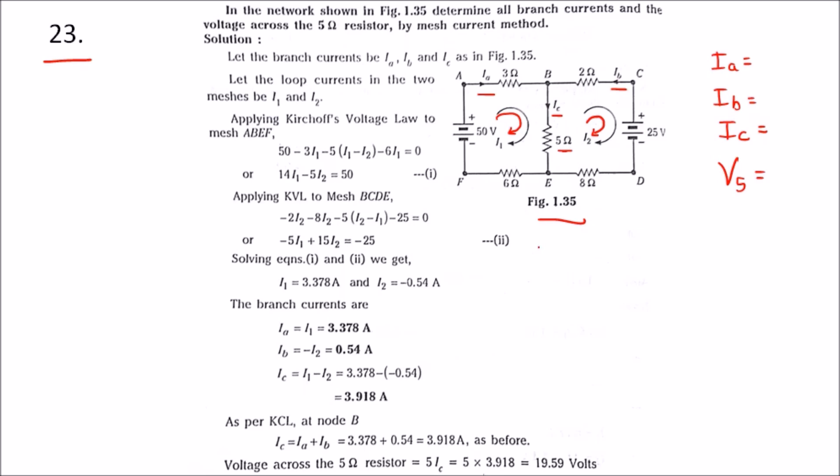When we apply Kirchhoff's Voltage Law, we get 50 - 3Ia - 5Ic - 6Ia = 0. We will simplify this to get equation one. Taking loop currents I1 and I2, when we apply loop current: 50 - 3I1 - 5(I1 - I2) - 6I1 = 0.